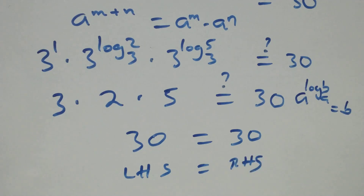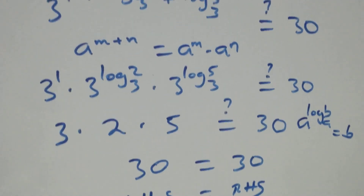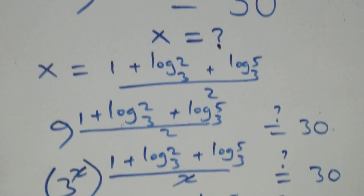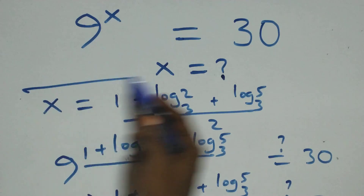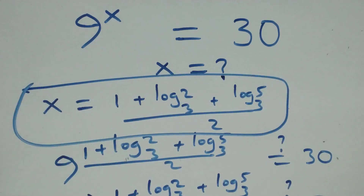Therefore, we conclude that x equals (1 plus log 2 base 3 plus log 5 base 3) all over 2, which satisfies the given problem. Thank you for watching. Subscribe for more videos, turn on the notification bell, share this video, give it a thumbs up, and put your comment below.